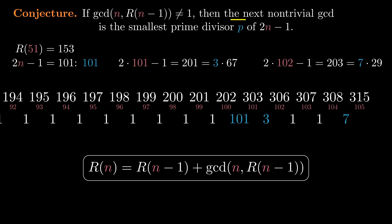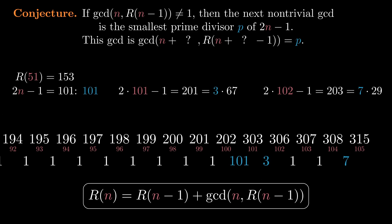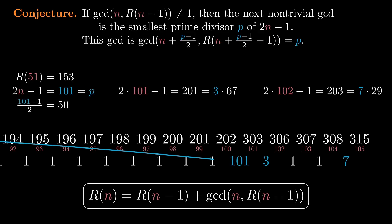So we think we know what the next non-trivial GCD will be, but when will it appear? We have a conjecture for that too: it appears P minus 1 over 2 steps later. This is exactly what we saw when n is 51. P is 101, so P minus 1 over 2 is 50, and the 101 appears exactly 50 steps later at index 101. When n is 101, the 3 appears one step later. And when n is 102, 7 appears three steps later.